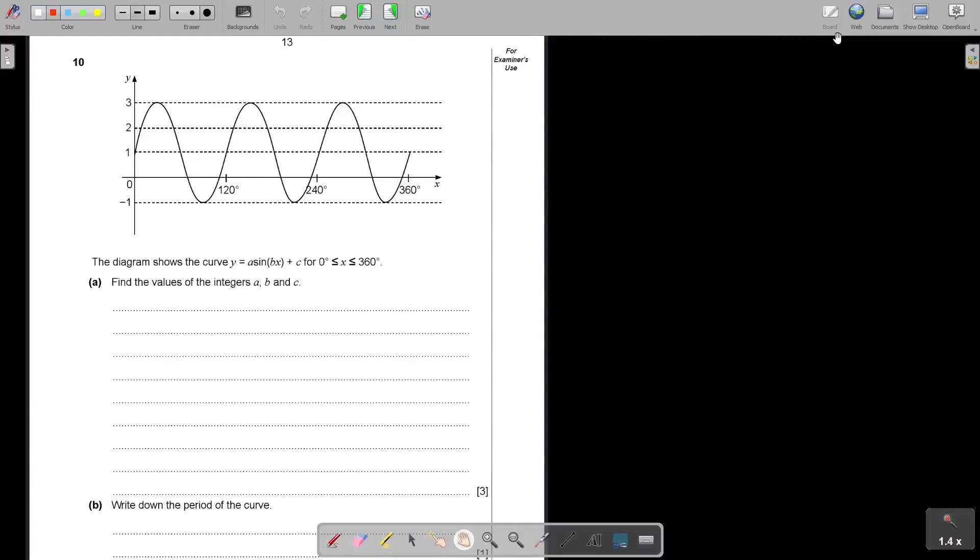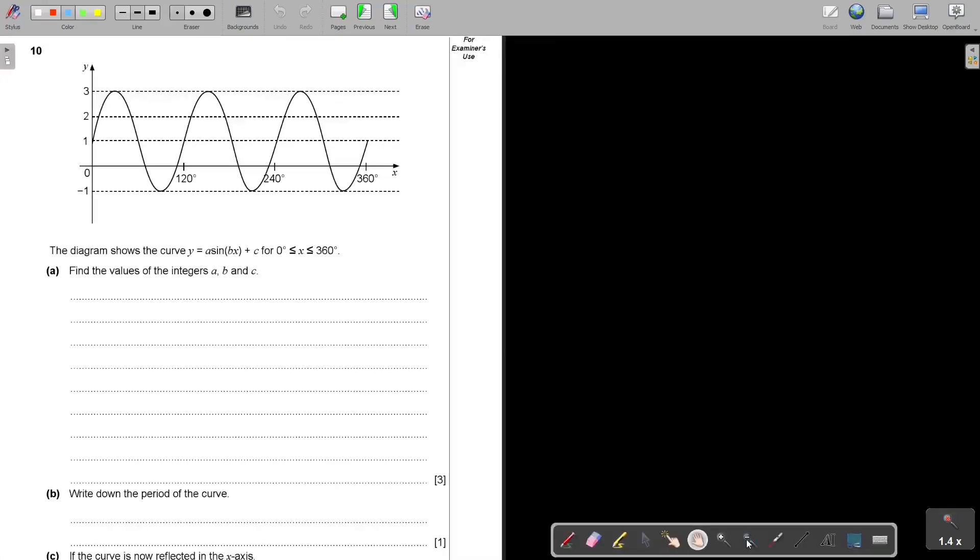Mathematics, Advanced Subsidiary Level, Paper 1, 2022, Part 5. Question number 10. Can you see it's a sin graph, but it's been translated a little bit? It's a little bit changed.